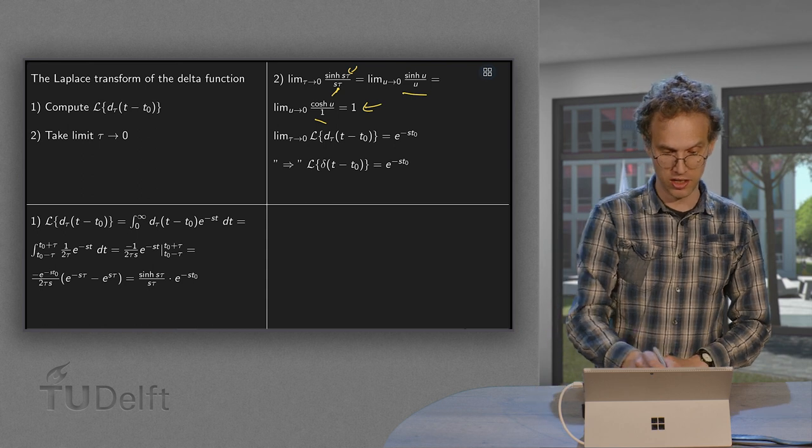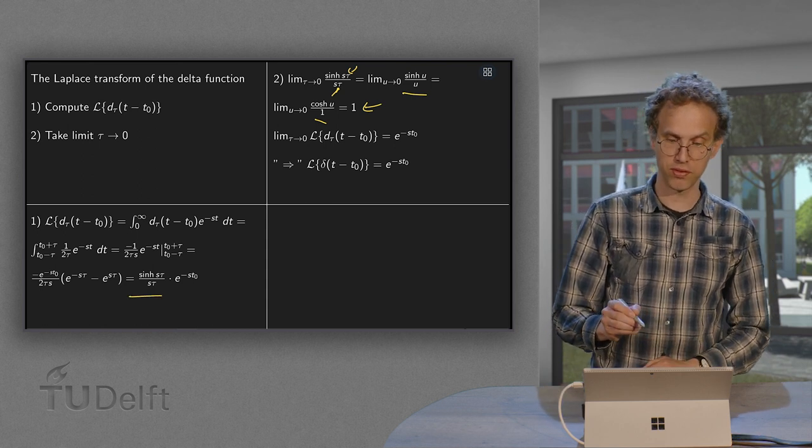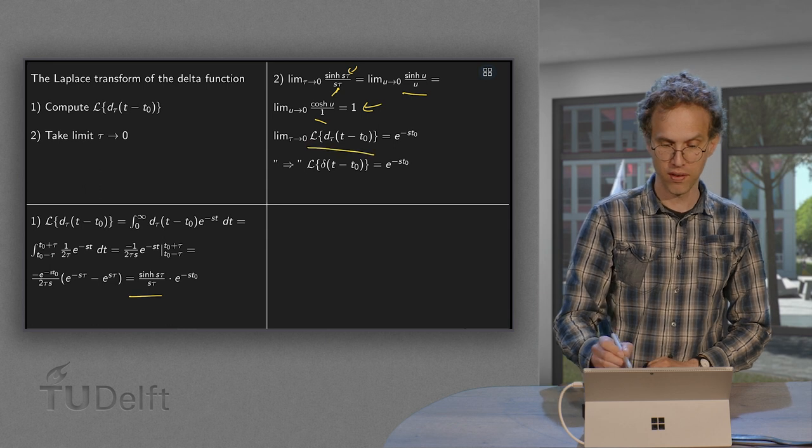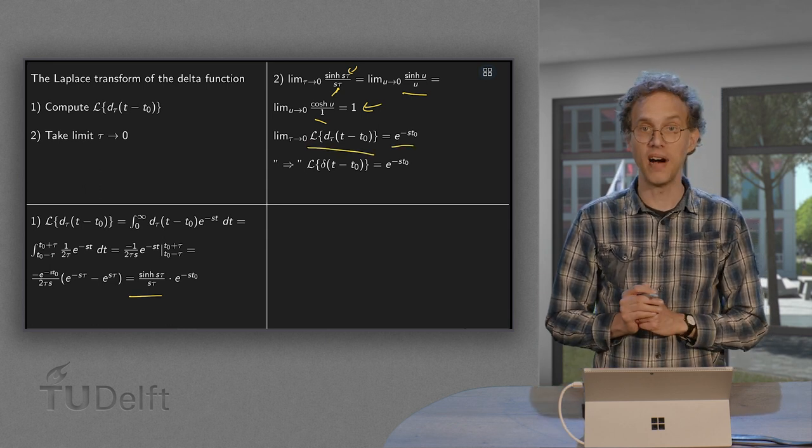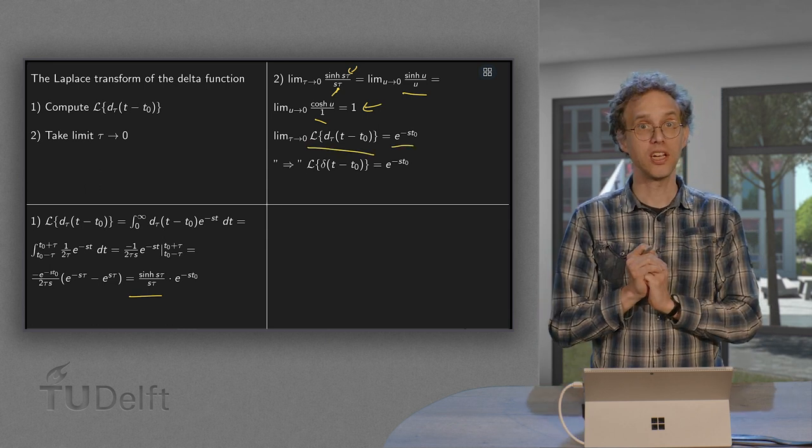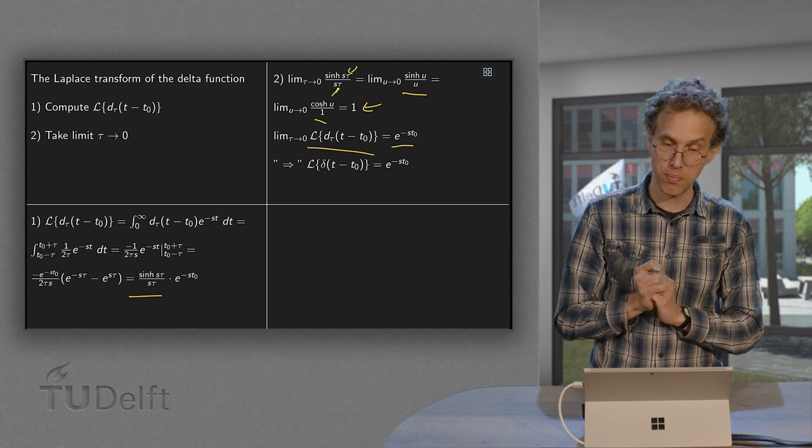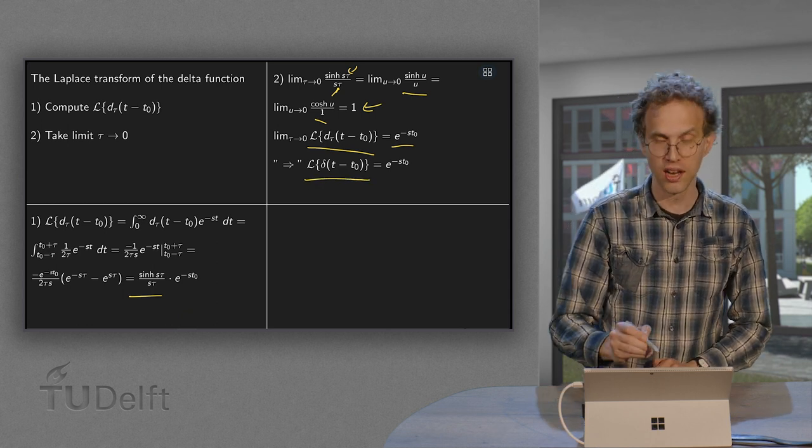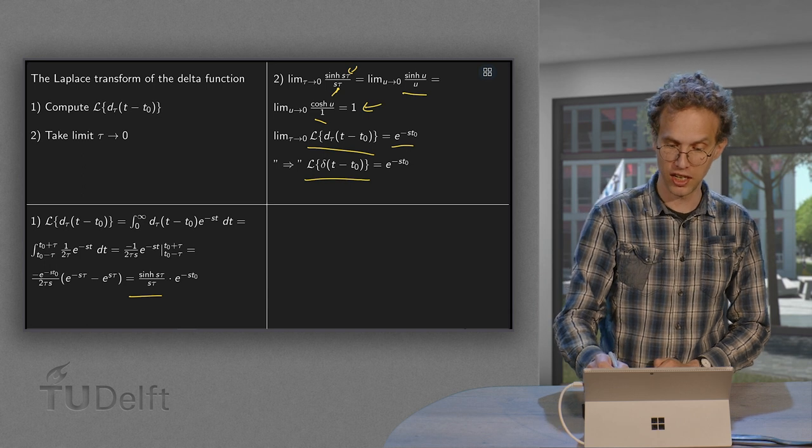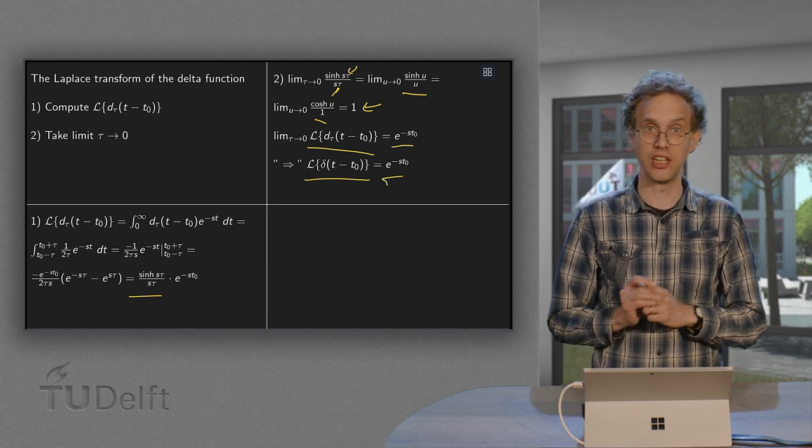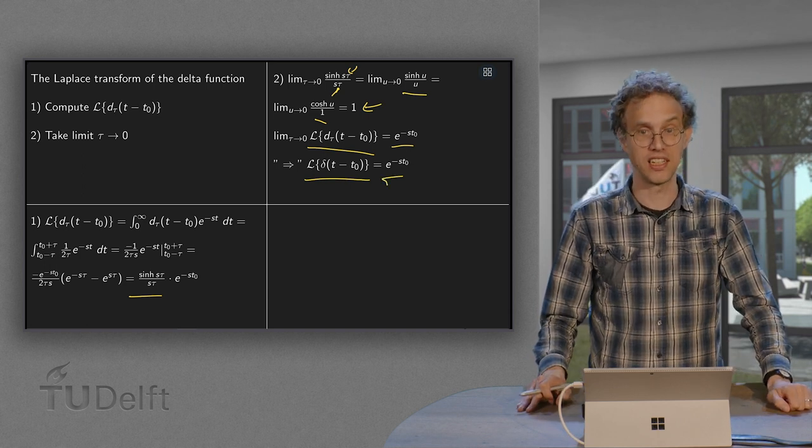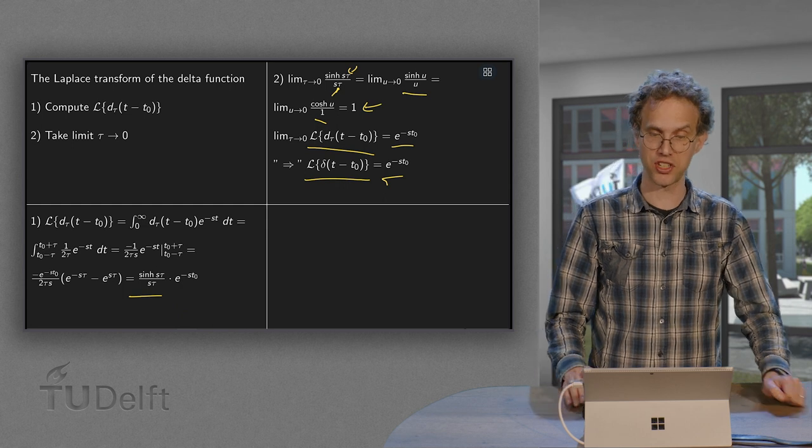So that's this part. So if we take the limit of τ → 0 of the full thing, we are just left with e to the power minus st₀. So that is what we will take as our Laplace transform of the delta function. Laplace transform of delta function is just e to the power minus st₀. That's what we will define as its Laplace transform.